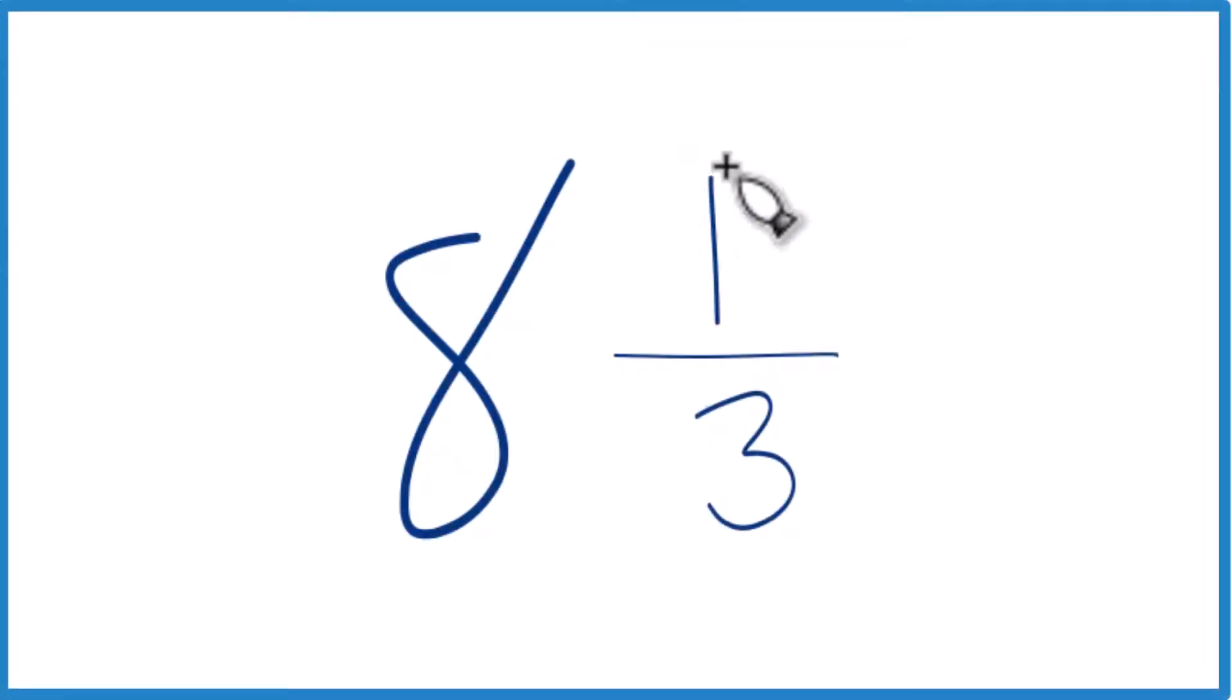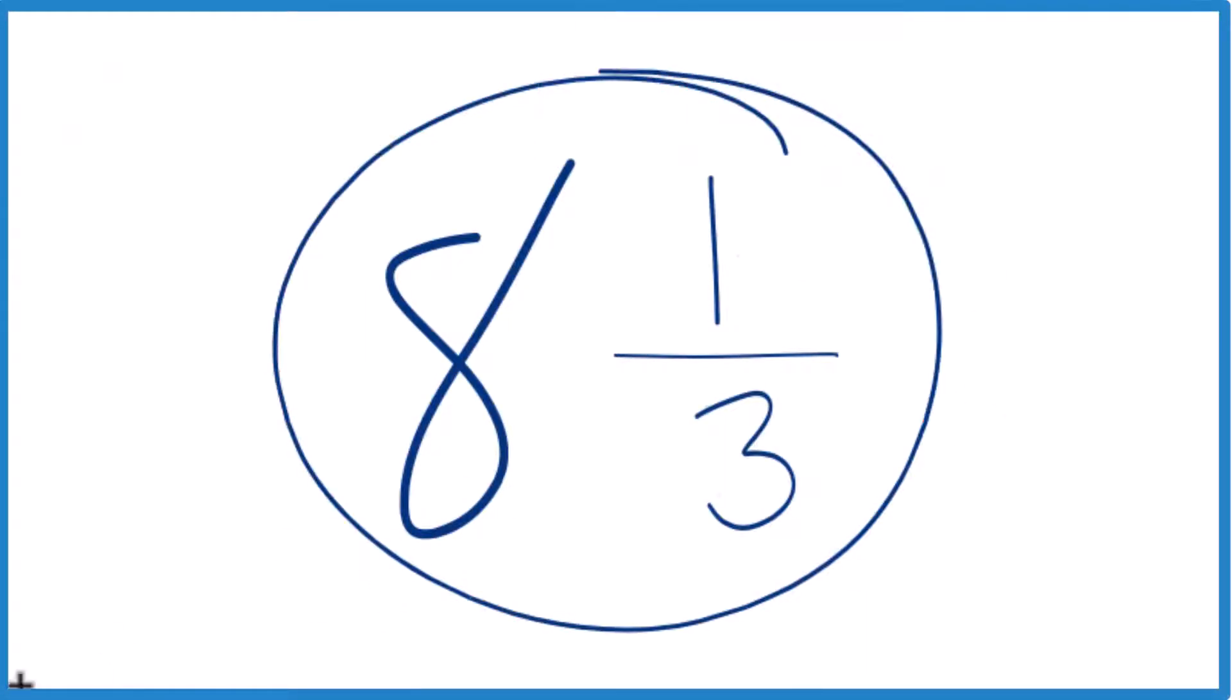Okay, so say you have the mixed number here, 8 and one-third. You want to get that to an improper fraction. Here's how you do it.